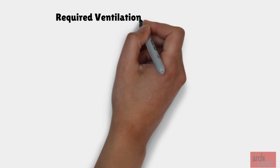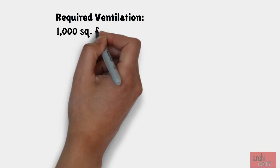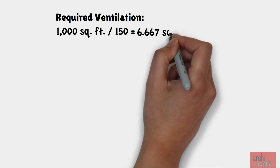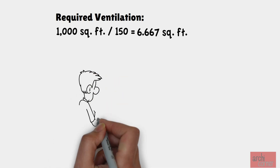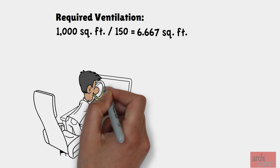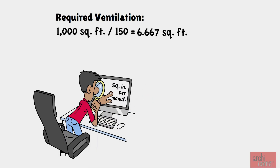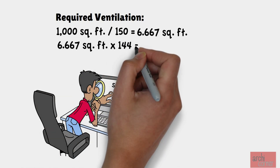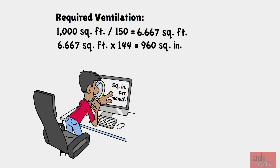The rest of the math is straightforward. We simply divide the area of 1,000 square feet by 150, which provides us with the required ventilation in square feet — in this case, 6.667 square feet. All product information for roof vents usually provides the net free area in square inches, so we convert this by multiplying by 144, giving us 960 square inches as the minimum required venting area.